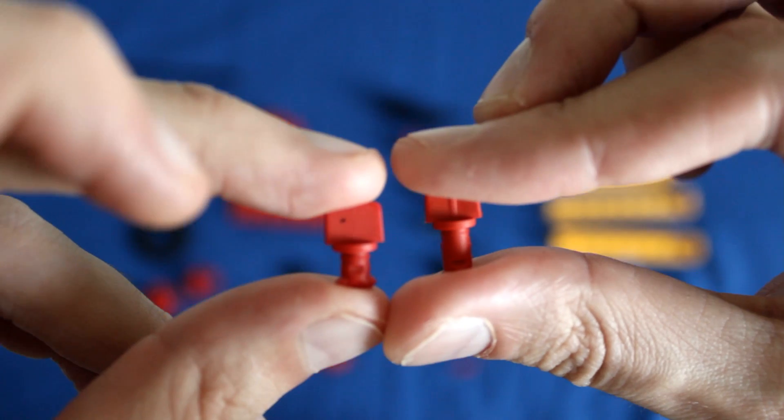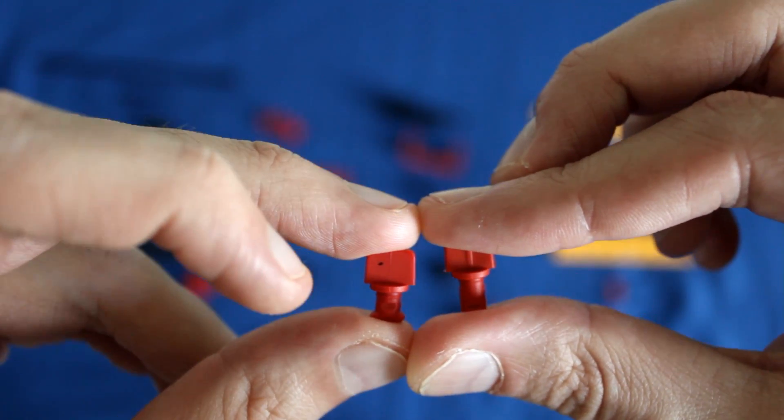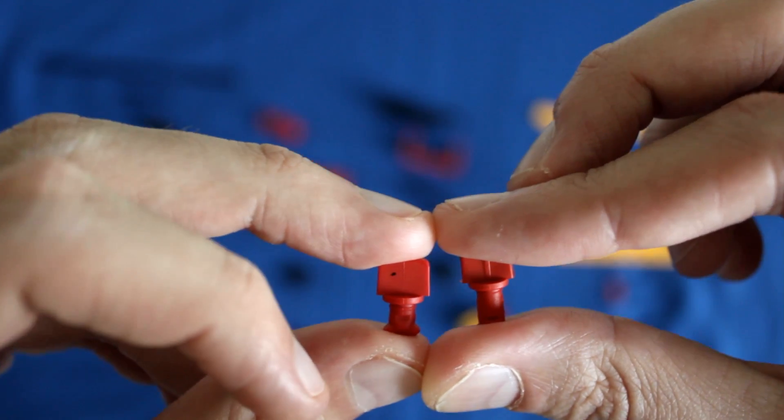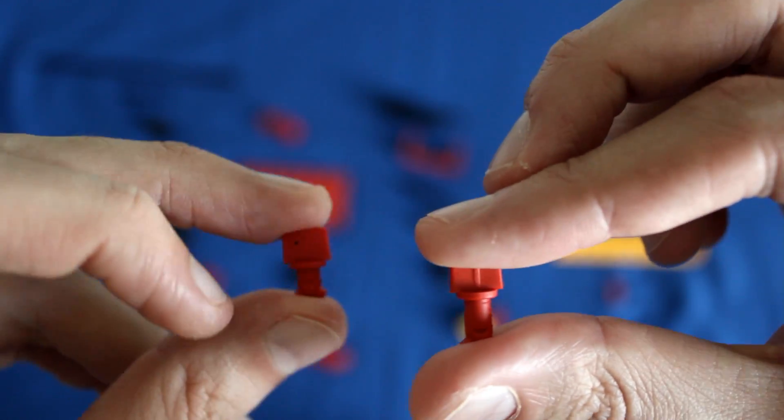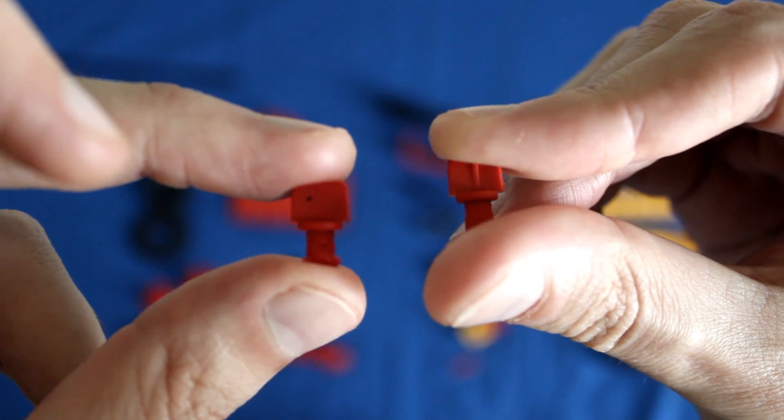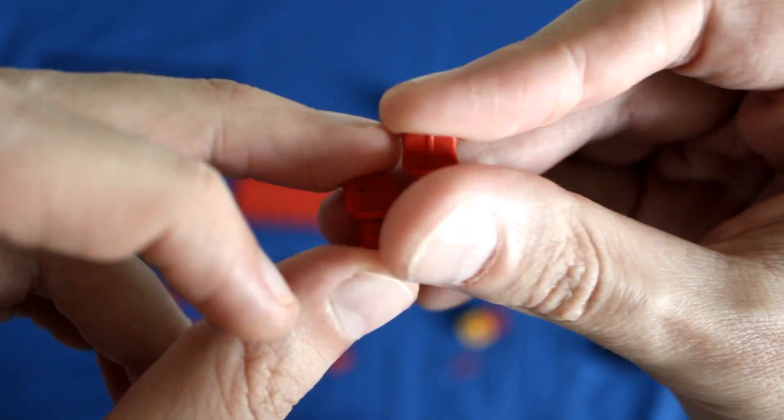So these are the rivets, and there's two different sizes. You can see one's a little bit longer than the other. There's a 4mm rivet, which is on my left, and there's a 6mm rivet, which is on my right. The purpose of the rivets is to utilize them with girders, and I'll show you in a few seconds how that's done.